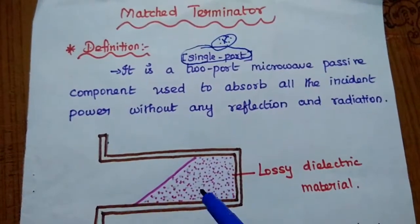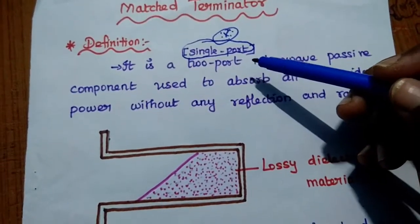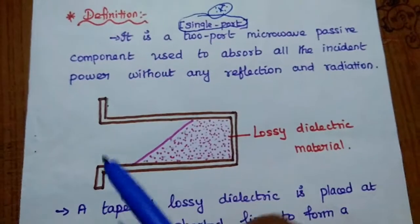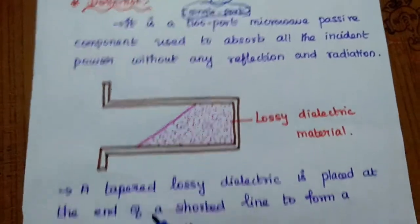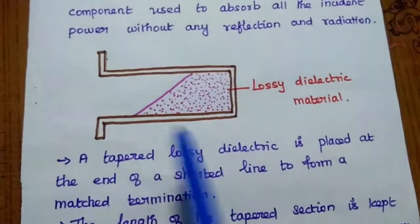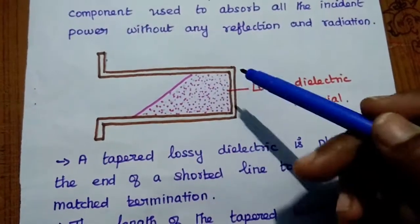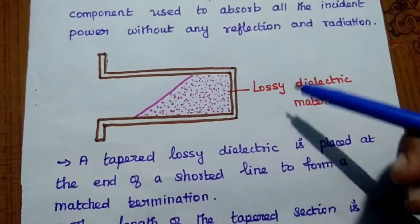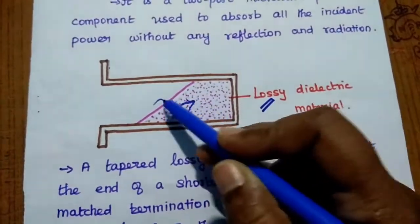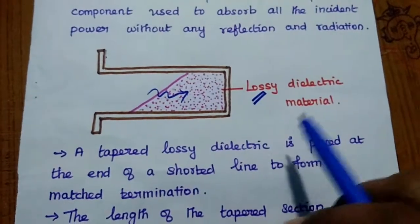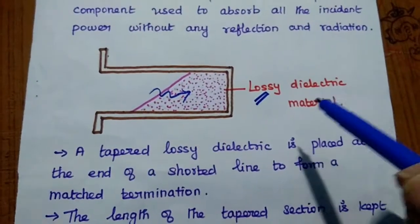It is very important to note that the matched terminator is referred to as a single port. Physically it has two sides, but one side is terminated, so it is represented as a single port — the signal is given in only one direction with no further transmission. The terminating part is filled with lossy dielectric material, and since it is lossy, it absorbs the power of the incident wave.